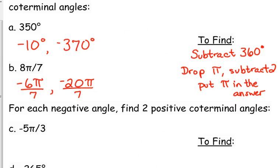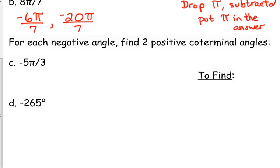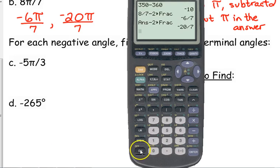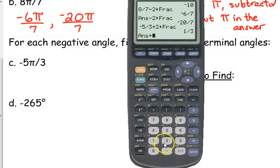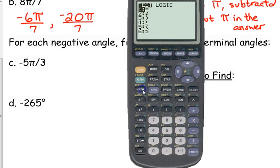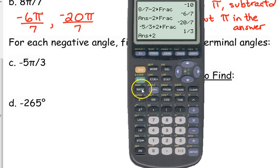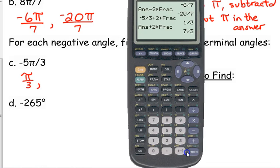Now, if we want to find positive coterminal angles, we're going to do the opposite. We're going to add. We're going to add 360, or we're going to add 2. So, the first one I gave you was in radians. I'm going to hurry up and do this. Add 2, turn it into a fraction. Add 2, turn it into a fraction, since they wanted 2. So, pi over 3 is 1, 7 pi over 3 is another. For the second half, you're positive.